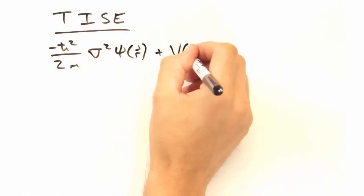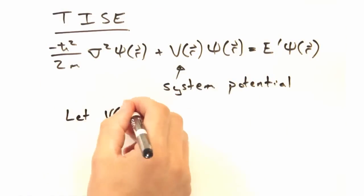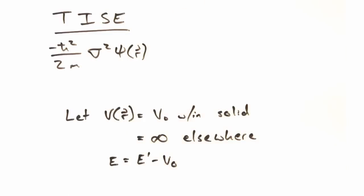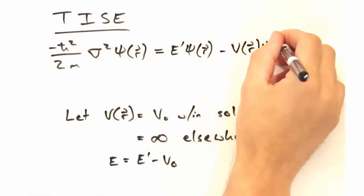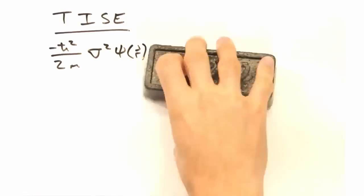Well in any sort of quantum problem, we always start with the time independent Schrödinger equation, as given here, including the system potential. And to make things easier, I'm going to wrap up the potential into our system energy with this new variable e.